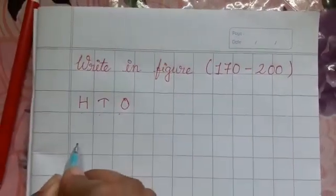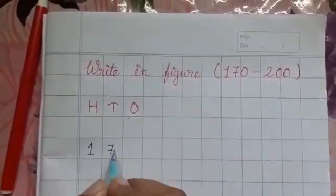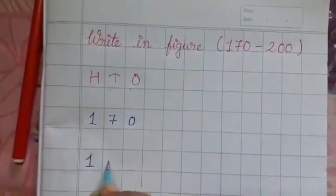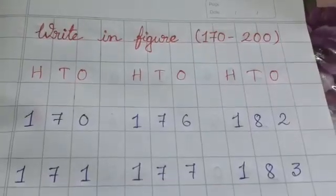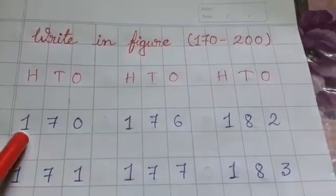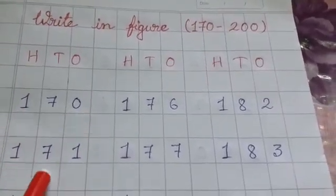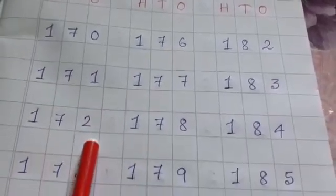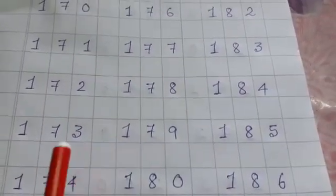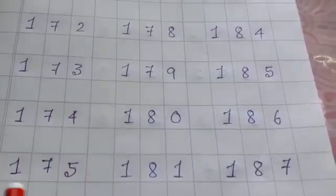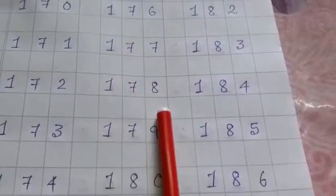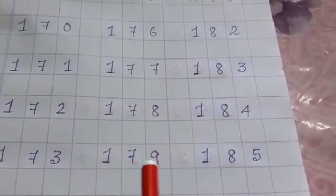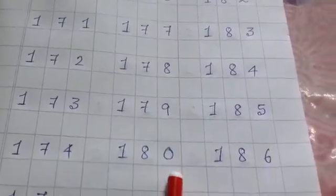We will start with 170. 170, 171. Like this, we will continue our writing. Now students, let's read this together. 170, 170. 171, 171. 172, 172. 173, 173. 174, 174. 175, 175. 176, 176. 177, 177. 178, 178. 179, 179. 180, 180.